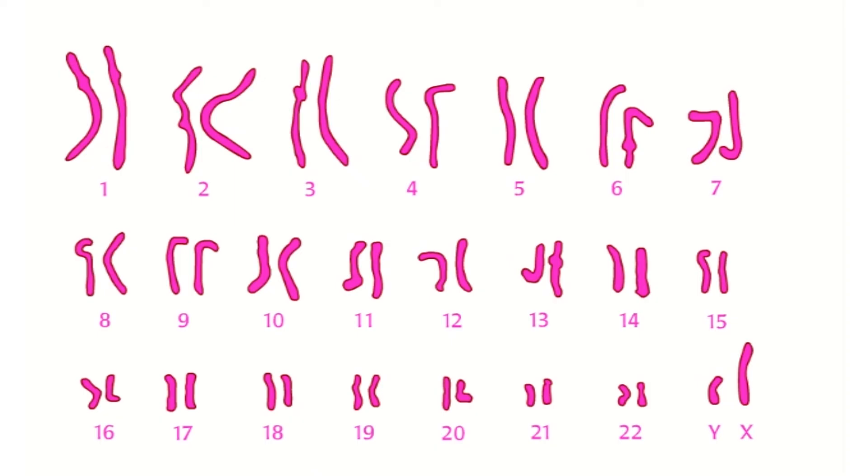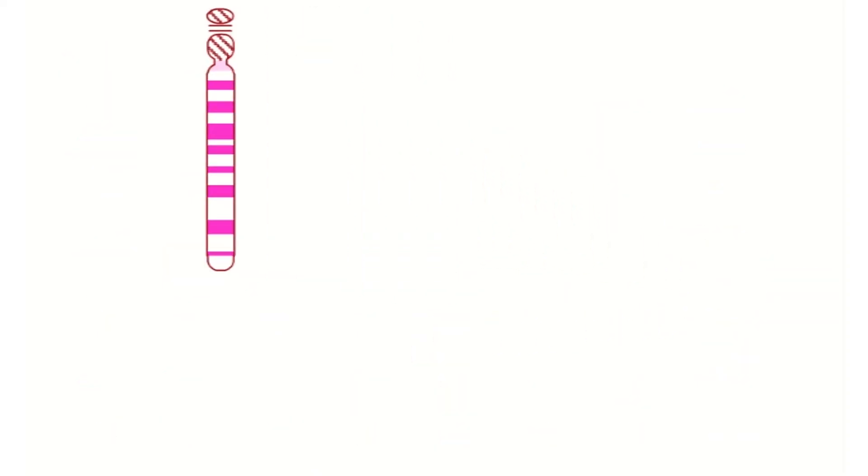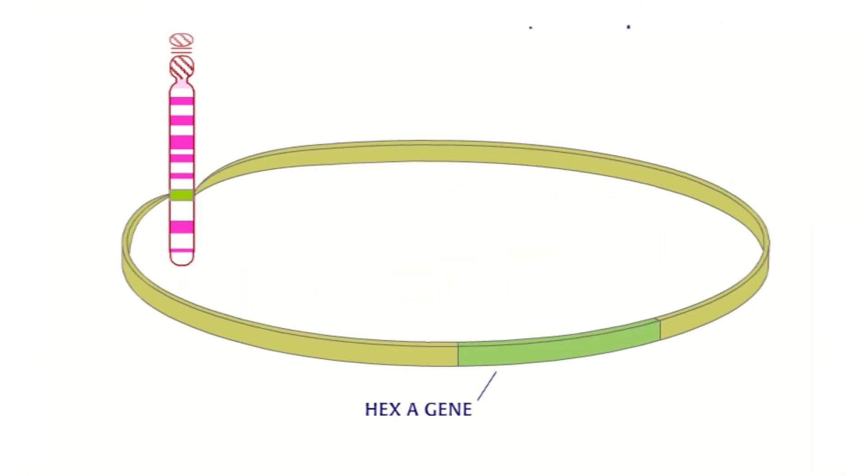The alpha subunit of hex A is encoded by a gene called hex A on chromosome 15. There are more than 90 mutations of this gene that can cause Tay-Sachs, which causes change in DNA sequence.